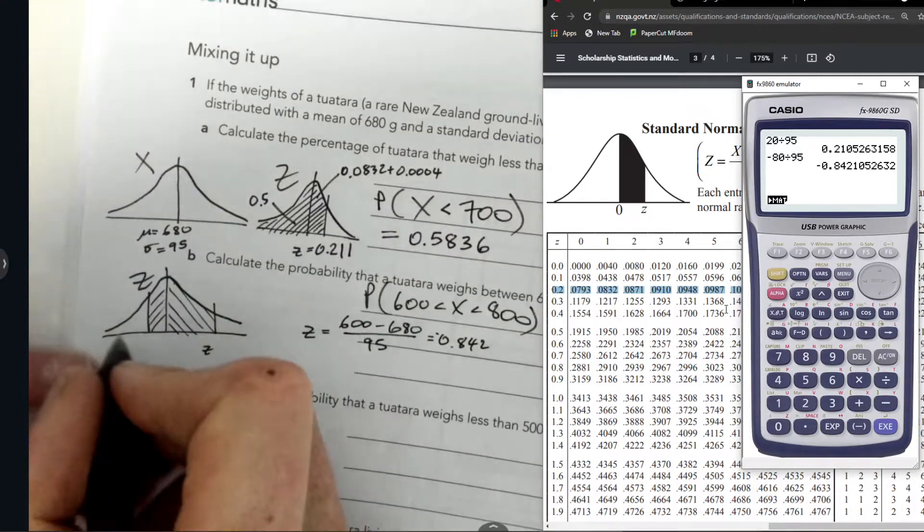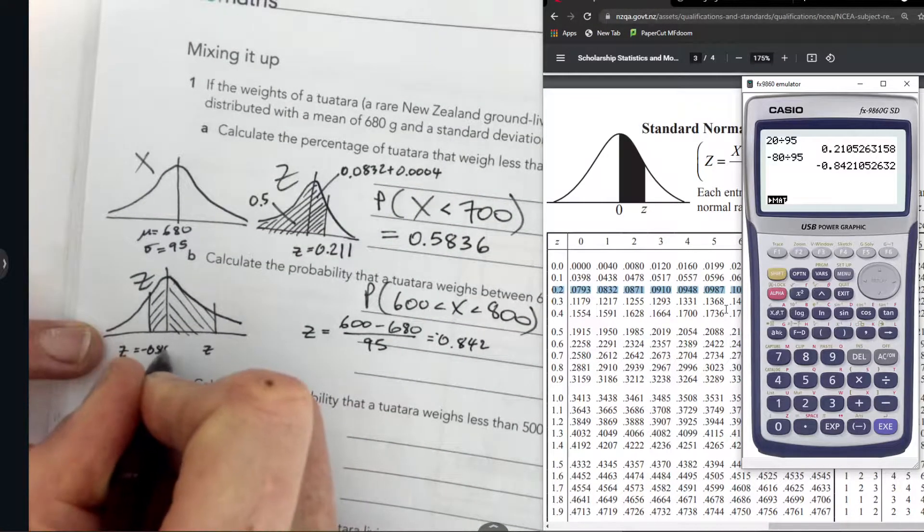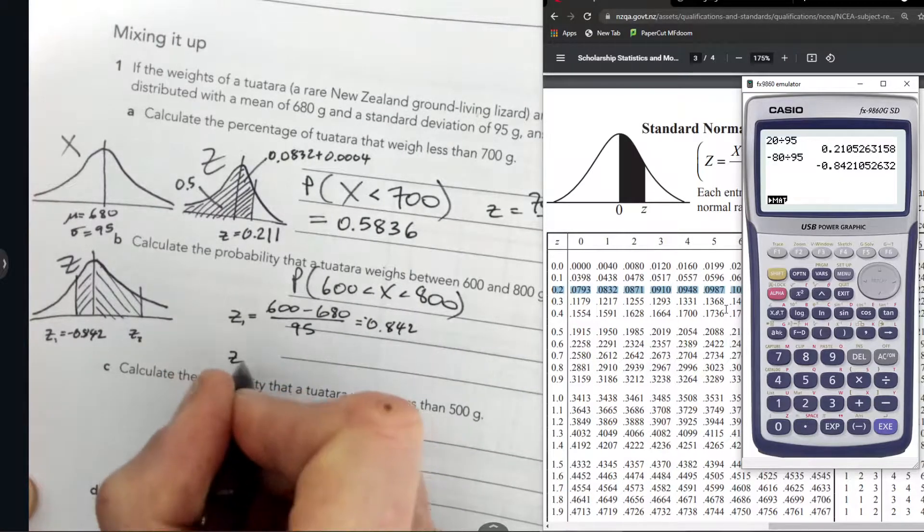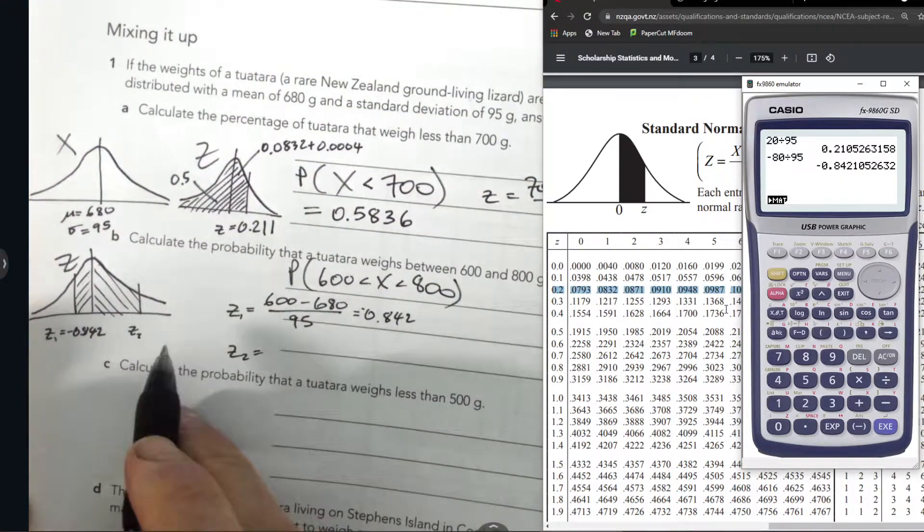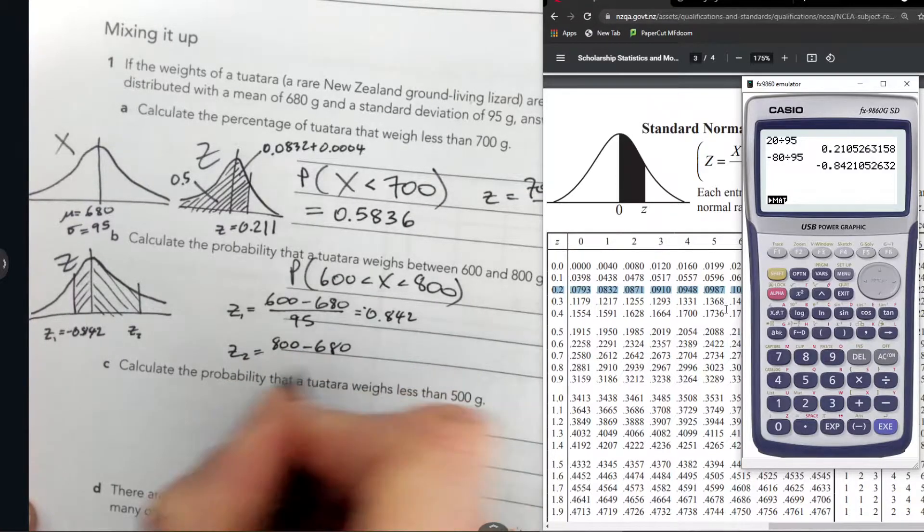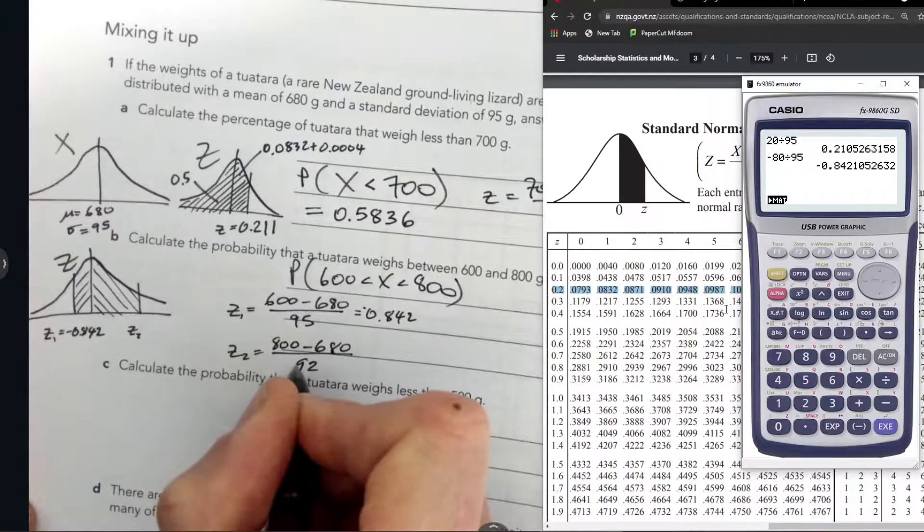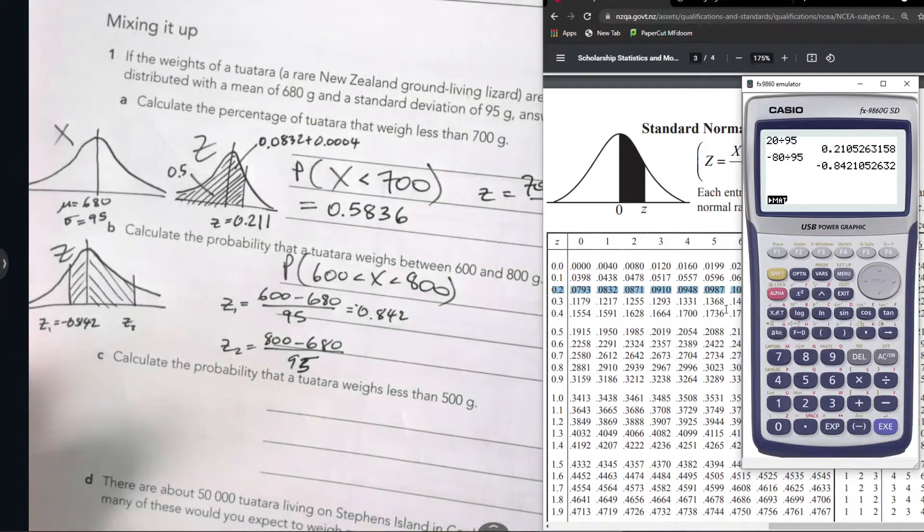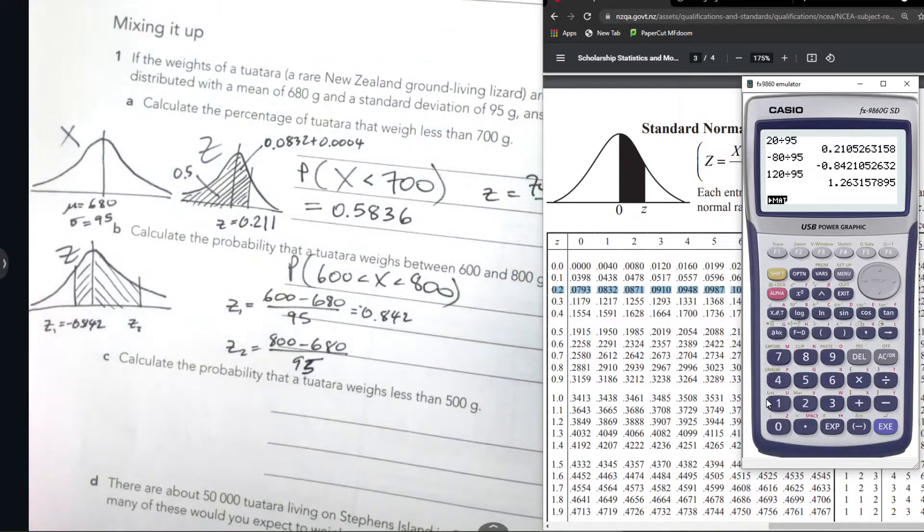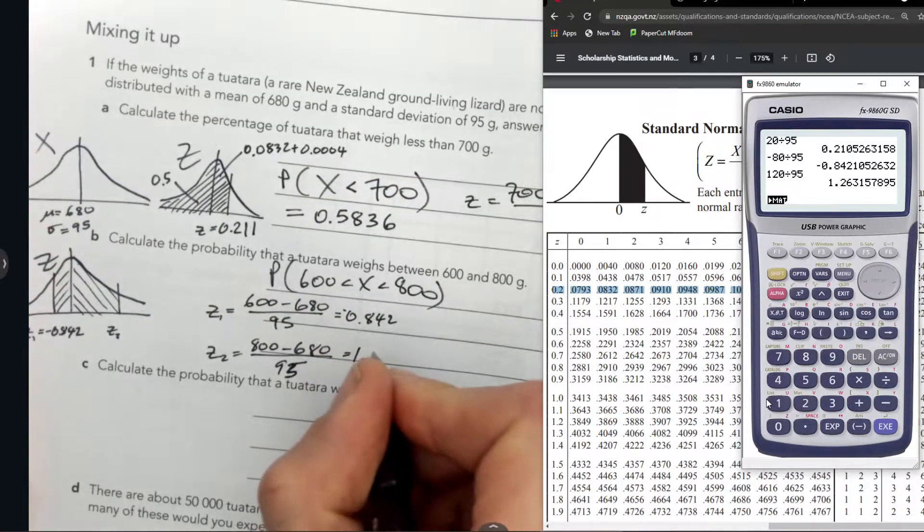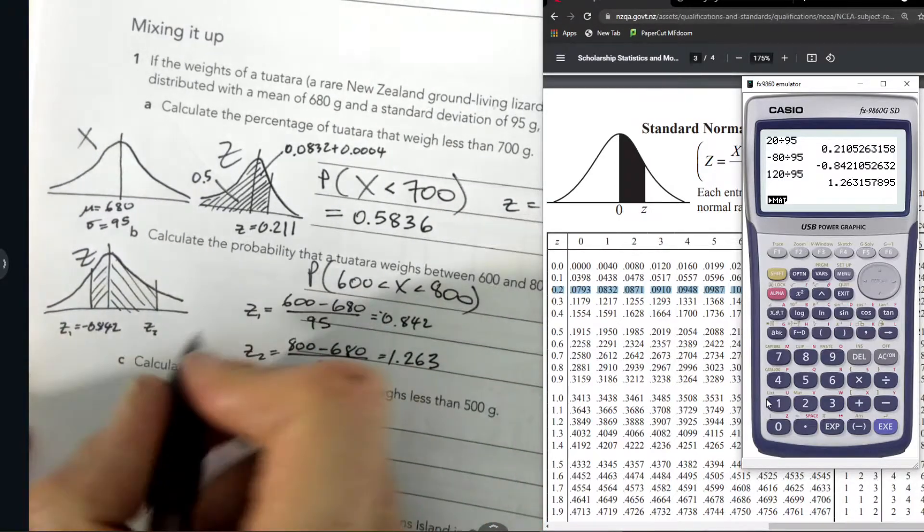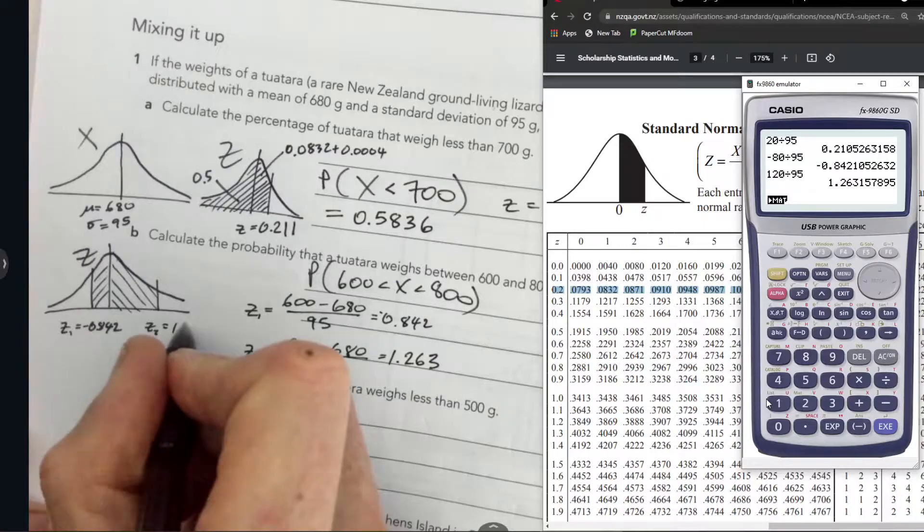Z equals 600 minus the mean which is 680 over the standard deviation which is 95. Negative 80 over 95. Negative 80 divided by 95, that is negative 0.842. I'm just going to label that straight on here. I might put a Z1 there and a Z2 here. The Z2 is that 800. 800 minus 680, 120 over 95. 120 divided by 95, that's 1.263. Remember I can only do three decimal places on the Z table. Now I've got my two Z values.